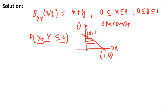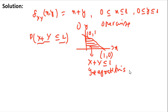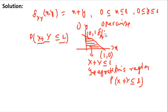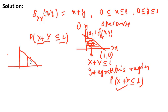The region x + y ≤ 1 is the triangular area below the line x + y = 1 in the first quadrant. Integrating f(x,y) over this triangular region will give us the probability P(x + y ≤ 1). We consider a strip in the y-direction within this region, bounded by the line x + y = 1.